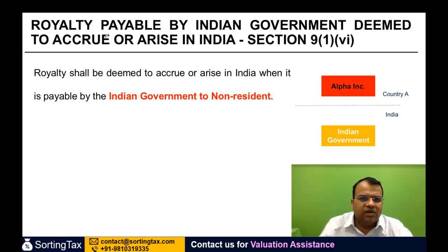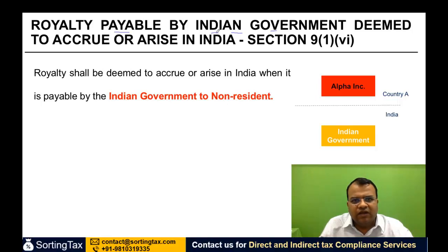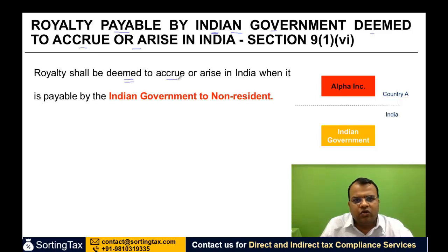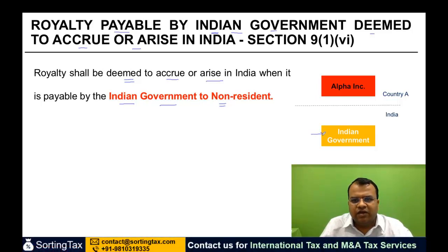The first and simplest one is when the royalty is payable by the Indian government. When would it be deemed to accrue or arise in India? If the Indian government has paid royalty to a non-resident, royalty shall be deemed to accrue or arise in India. When it is payable by the Indian government to the non-resident, we deem that it is accruing or arising in India.